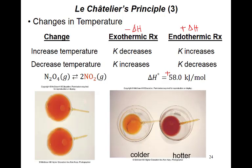For an exothermic reaction, if you increase the temperature the system is already liberating heat, so having more heat added makes both contributions increase — the system will go in the reverse direction, or K will decrease. If K is smaller the reaction goes reverse; if K is bigger the reaction goes forward. For an endothermic reaction, if the temperature is increased the system needs heat and heat is provided, so the system goes forward and K increases.